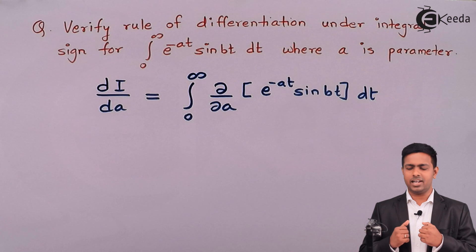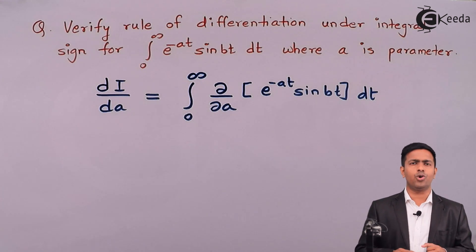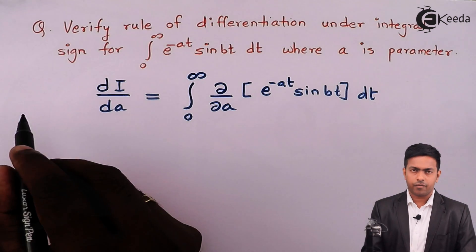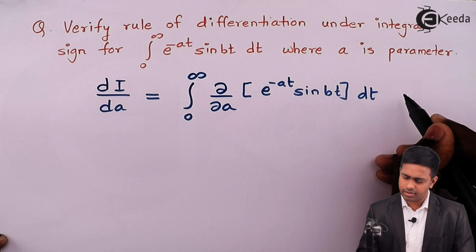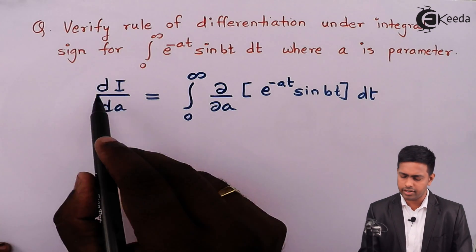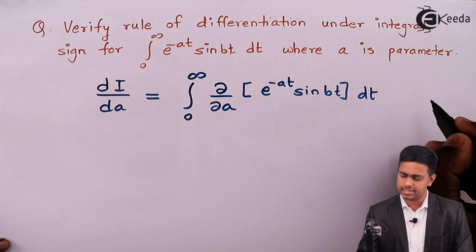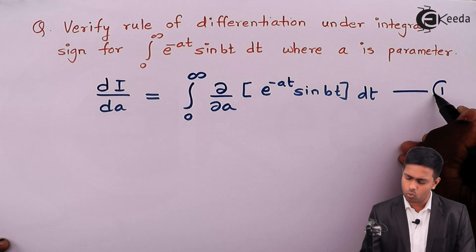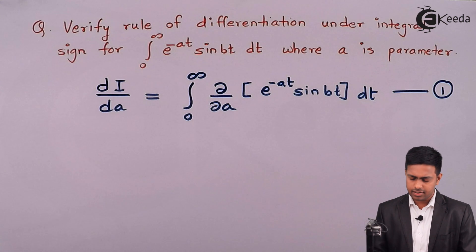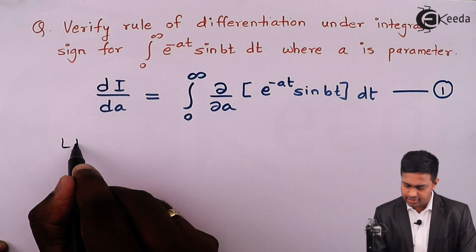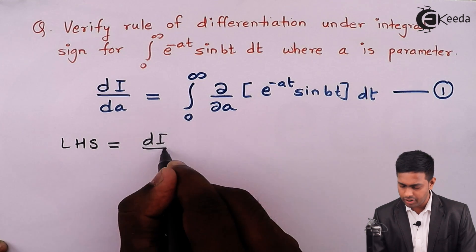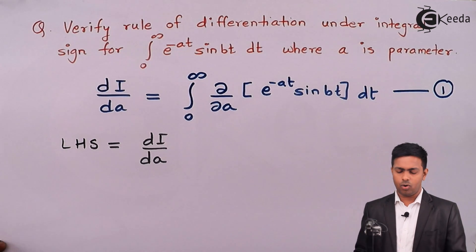In our question we have to verify this rule. What we'll do is solve the left hand side separately to find one value, then solve the right hand side separately to find another value, and if both values are the same, we will say the rule of DUIS is verified. I'll call this rule equation number 1. Let's start with the LHS, which is dI upon dA.